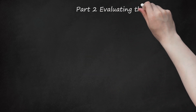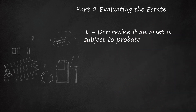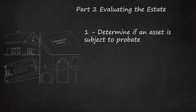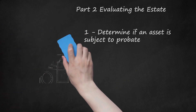Part 2: Evaluating the Estate. Step 1: Determine if an asset is subject to probate. The only assets subject to probate are property owned solely in the name of the decedent at the time of death, such as a car or house, or property owned as tenants in common. Assets not subject to probate include assets owned jointly with a surviving spouse, retirement accounts with a named beneficiary, life insurance proceeds with a named beneficiary, property held in a living trust, co-owned savings bonds, pension distributions, and certain household goods designated under state law.